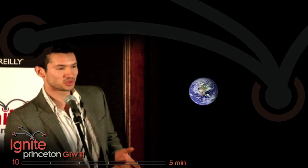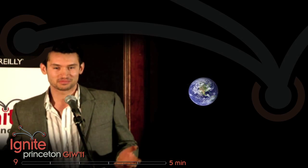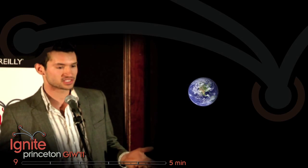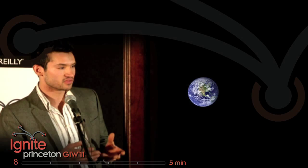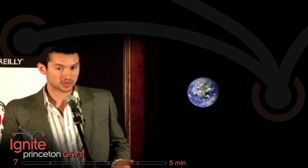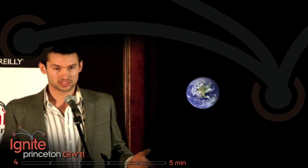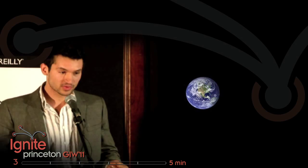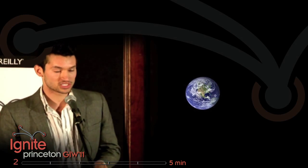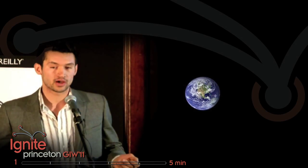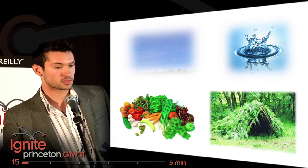So you have Earth, a tiny little blue-green blob floating in space. We have about 7 billion people now inhabiting the Earth and a lot of other organisms, but a limited amount of resources and a limited amount of space.